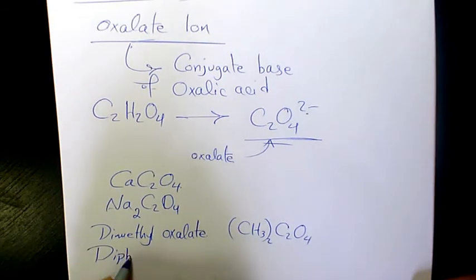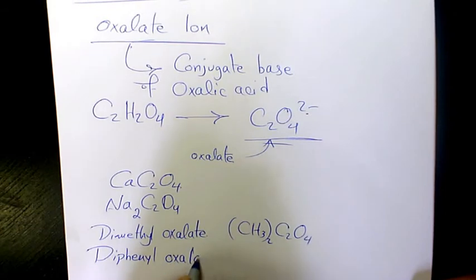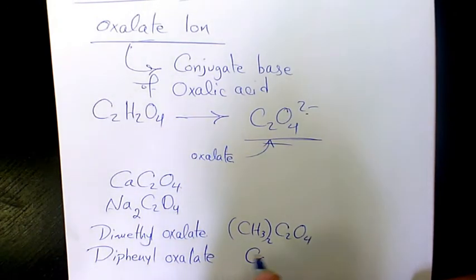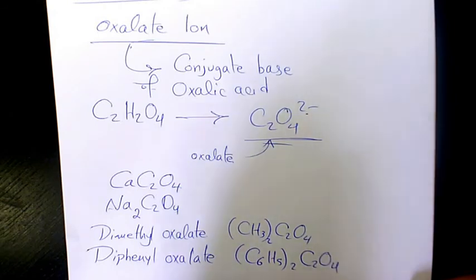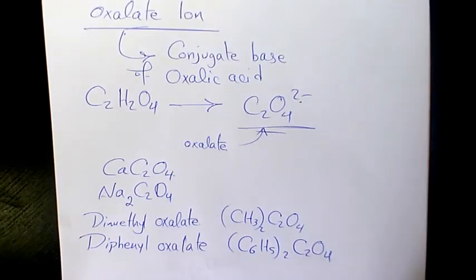Another one is diphenyl oxalate, which is (C6H5)2C2O4. So these are different examples of oxalate ion. I hope you enjoyed this video.